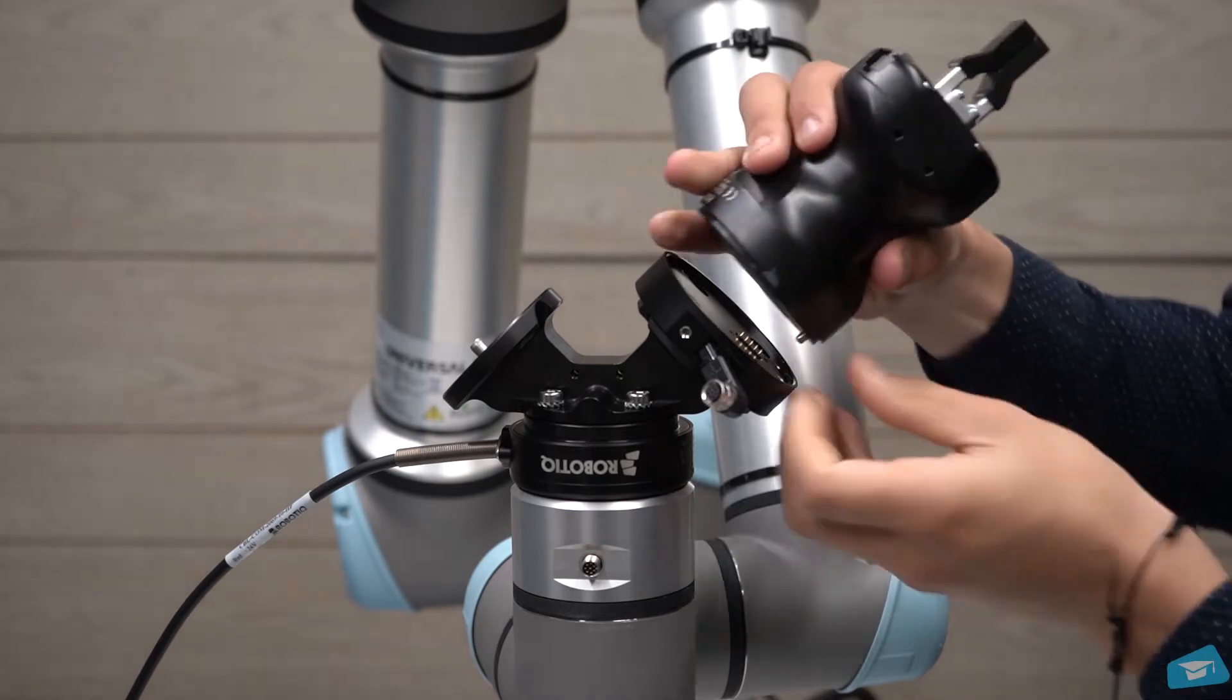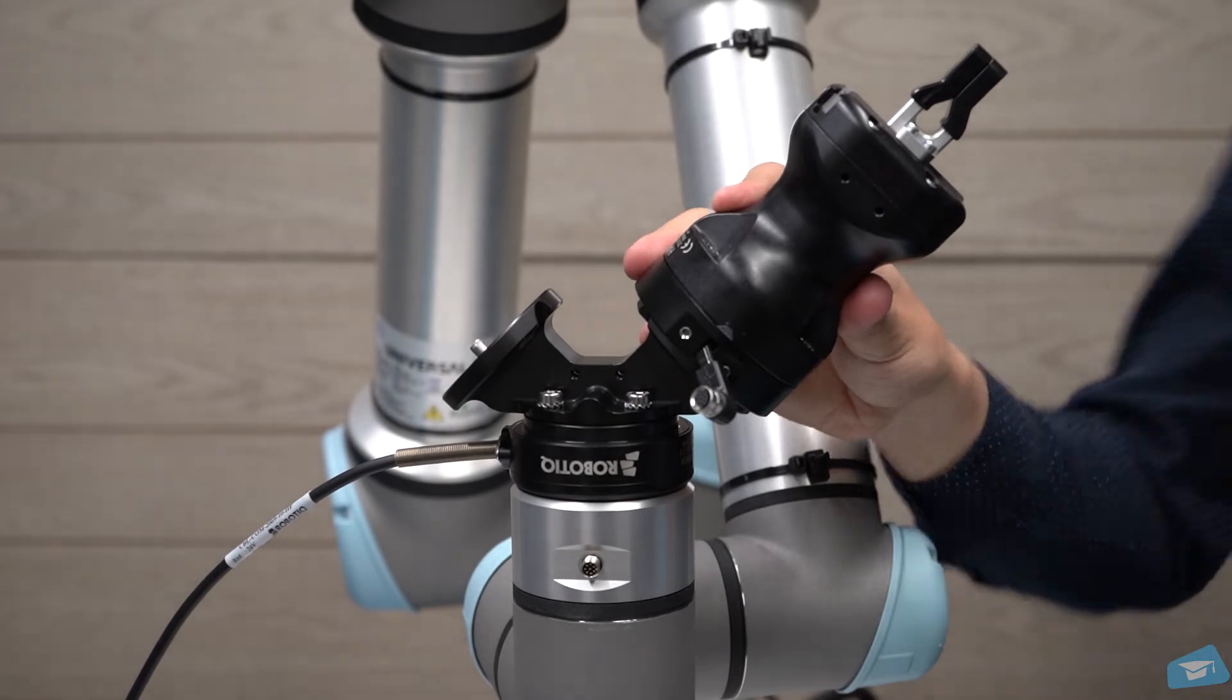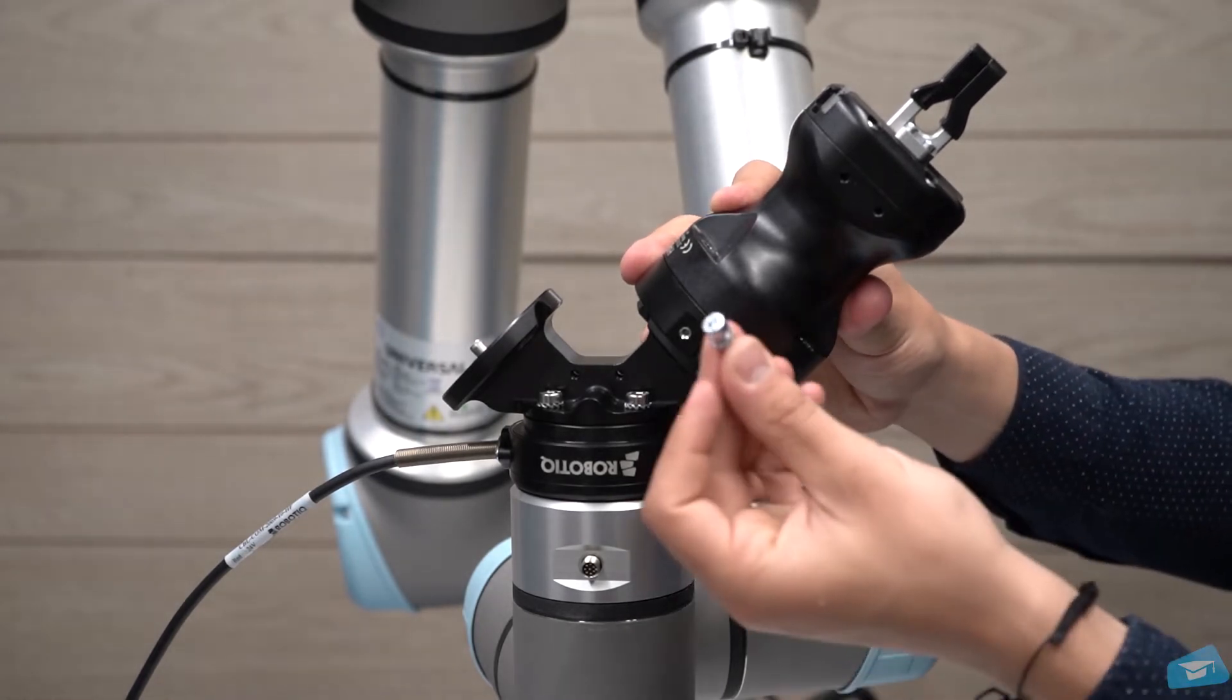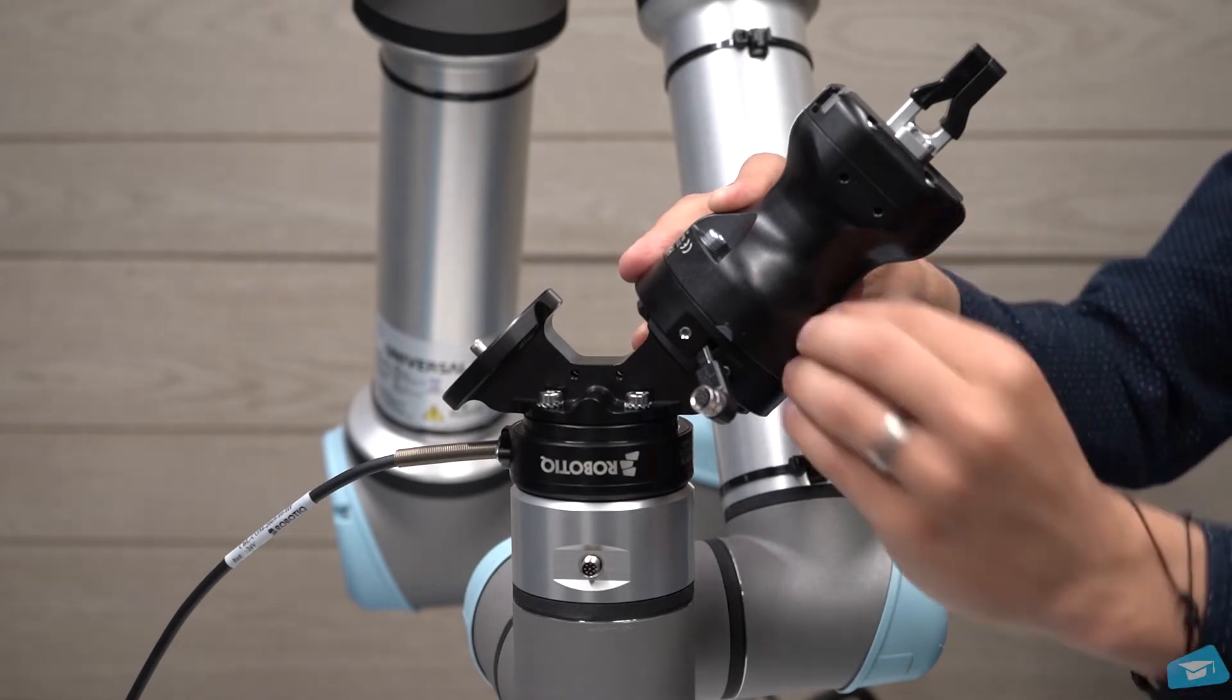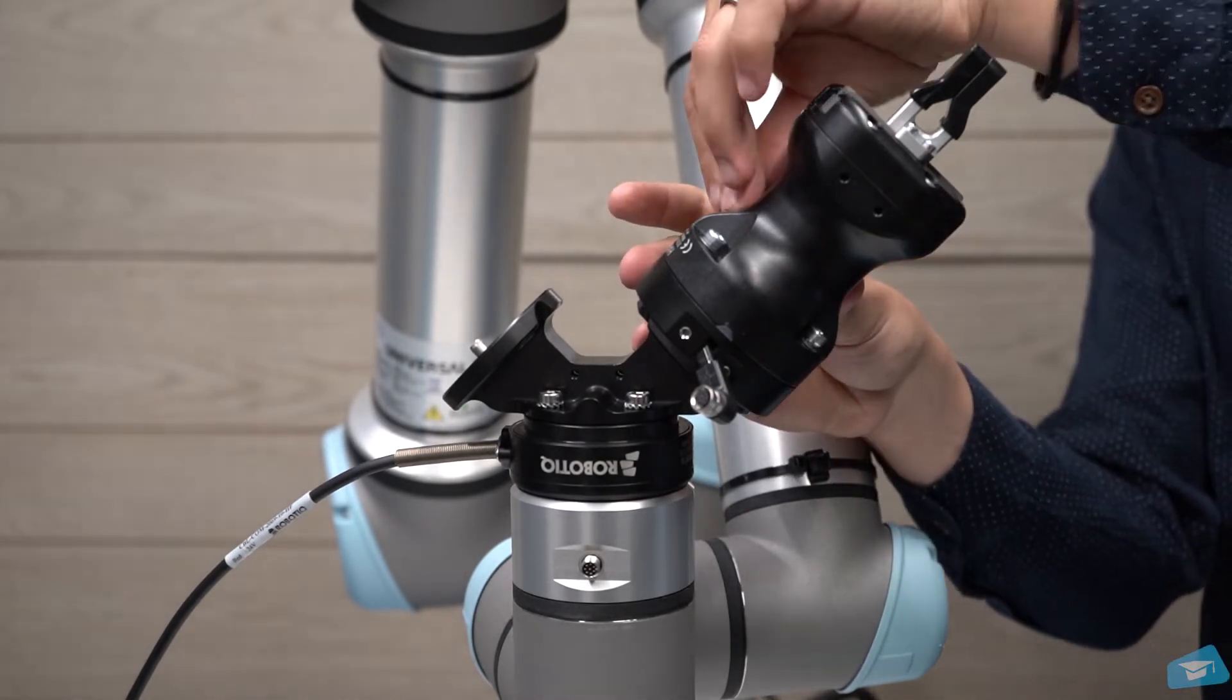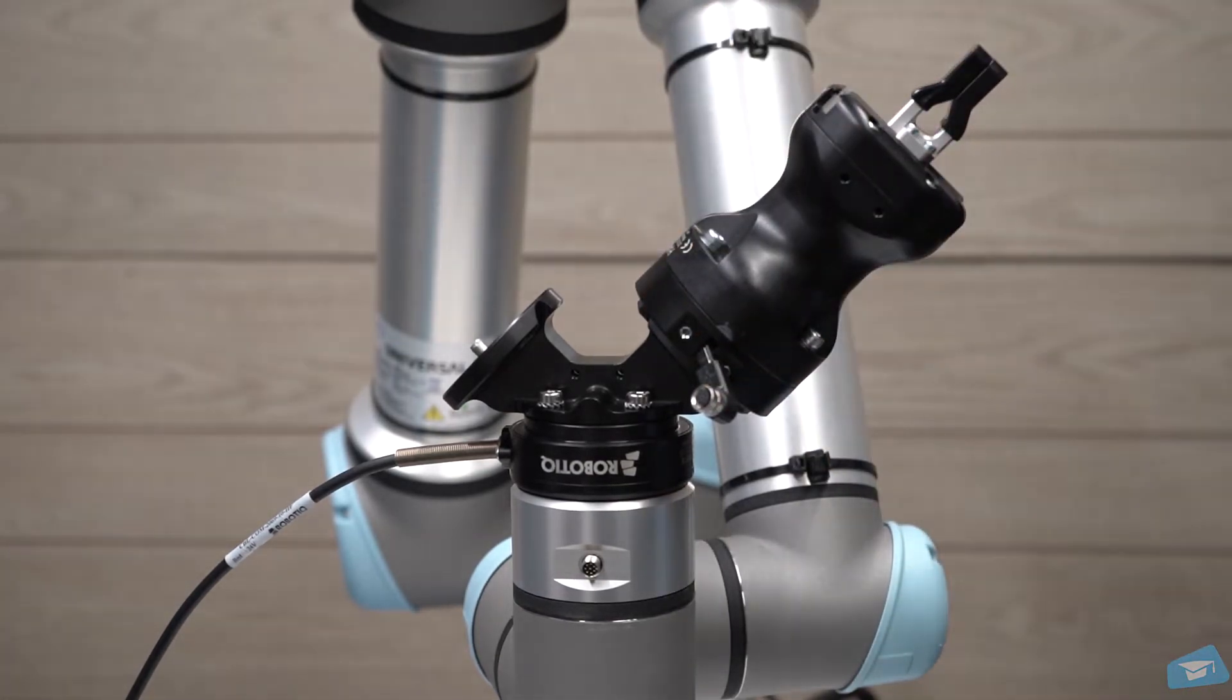Align the gripper using the dowel pin already installed into the gripper. Watch out for the connector pins as they are fragile and really important for your gripper communication and power. Secure the gripper with the four screws and their respective tool lock washers. Use the same procedure to install the other gripper.